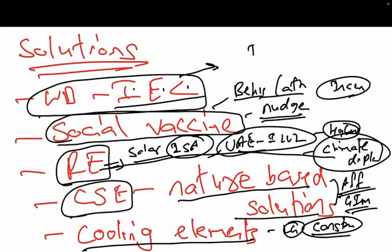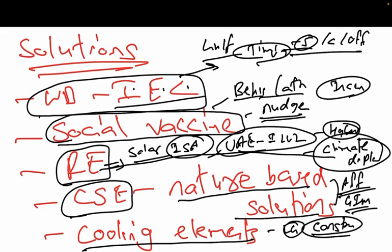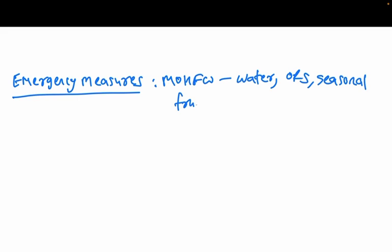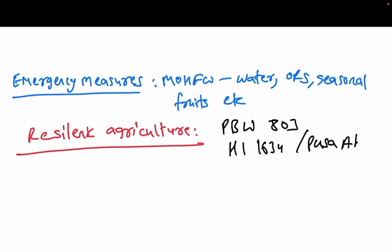Then, the timings of the people, timings of the school, timings of the colleges and offices should be in concurrence with the change in temperatures. If you take examples from Gulf countries, they will follow the same thing. By this, I can tell you that we can cope up with the climate change. I would like to tell you that emergency measures like the Ministry of Health and Family Welfare suggested water, ORS, seasonal fruits should be with the people.